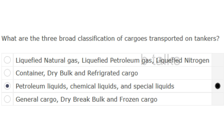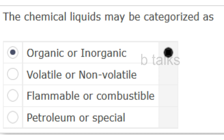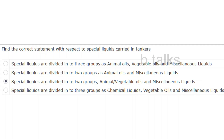Answer: Petroleum liquids, chemical liquids, and special liquids. The chemical liquids may be categorized as: Organic or inorganic, Volatile or non-volatile, Flammable or combustible, or Petroleum or special? Answer: Organic or inorganic.